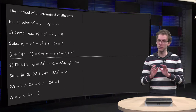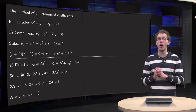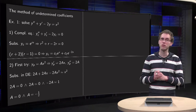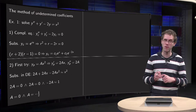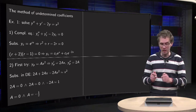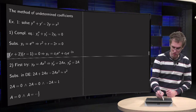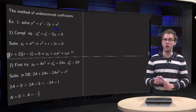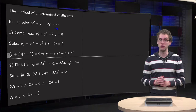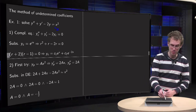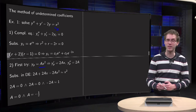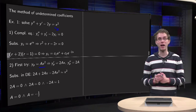End of step 1, onto step 2. We try to find a particular solution. The right-hand side equals x², so we could try yp = ax². Let's see what happens.